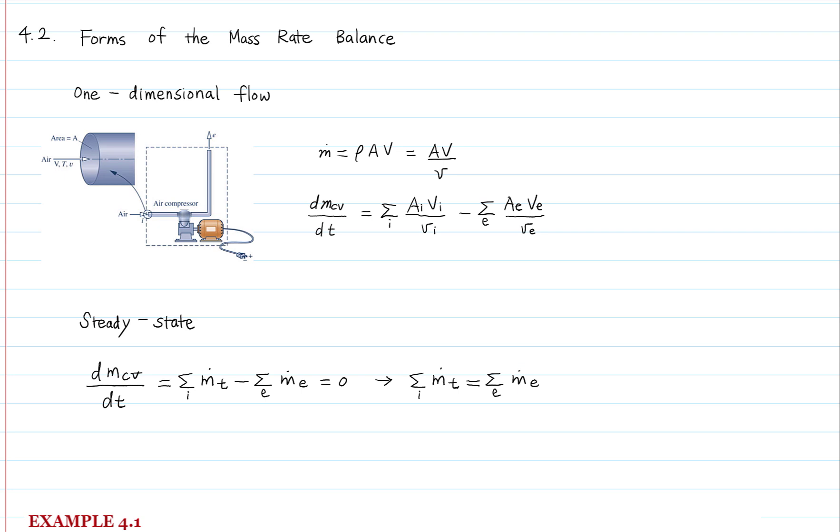4.2 Forms of the Mass Rate Balance. Mass flow rate is equal to the density times area times velocity. The area is the cross-sectional area of the fluid. The product of area and velocity is the volume flow rate. It can be also expressed as the volume flow rate divided by the specific volume of the fluid. The reciprocal of density is the specific volume.